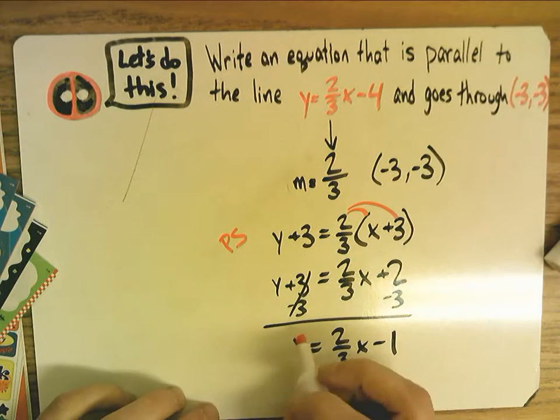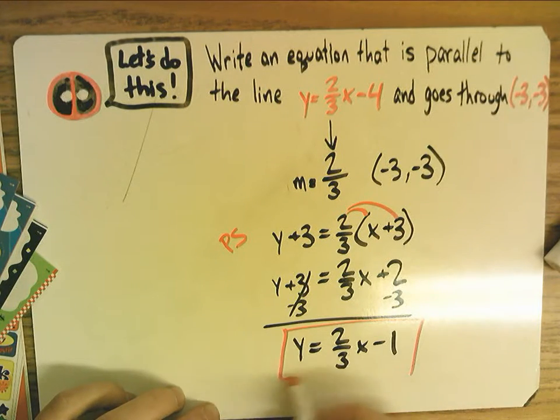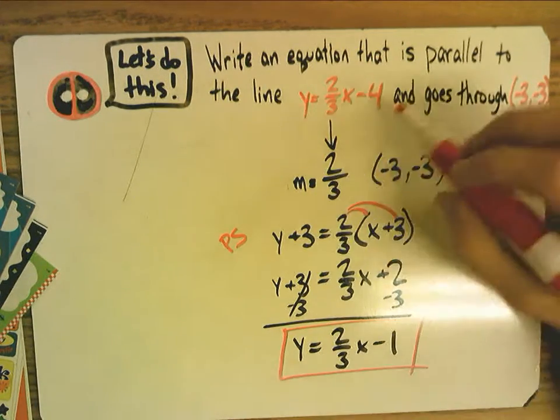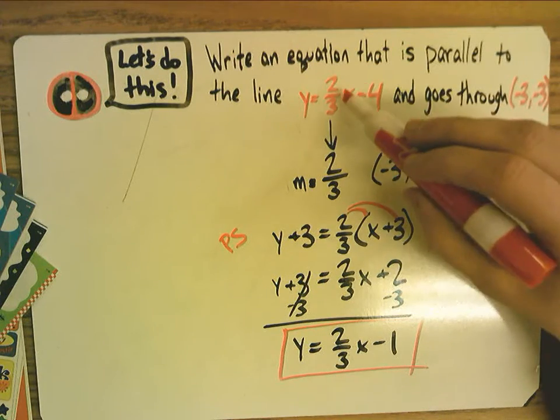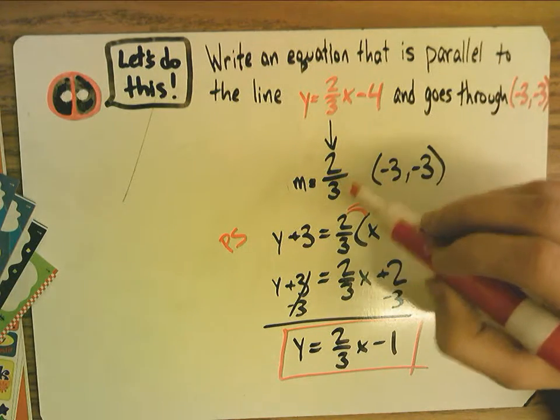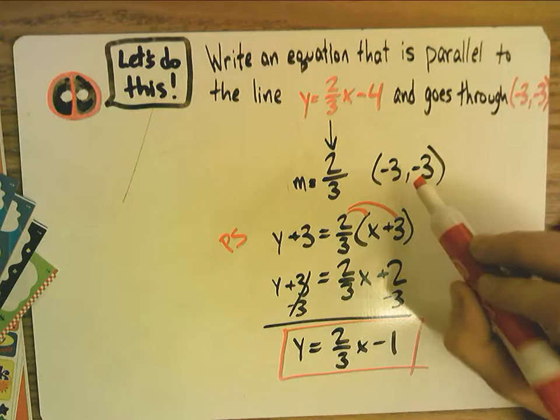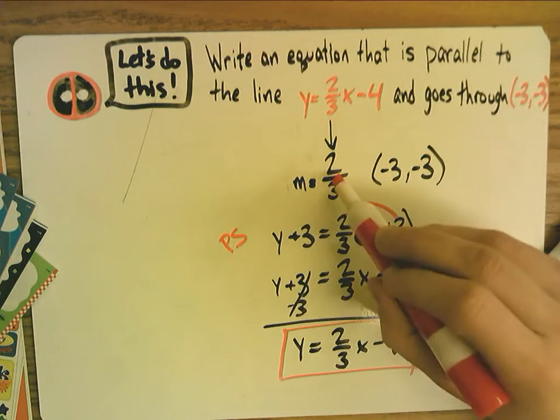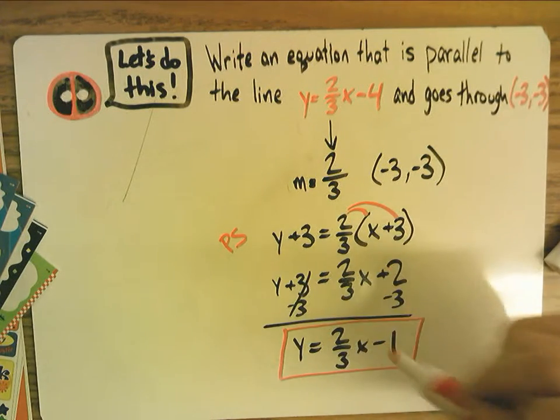And your final answer is the equation shown. Okay, so all we did was we took the slope from the original line, because it was parallel, we keep it the same. And then we use our point that was given, and our new slope, to put it into slope-intercept form.